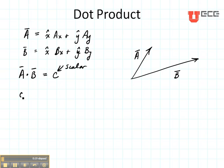A dotted with B, so in other words the value of C, is just AX times BX plus AY times BY.